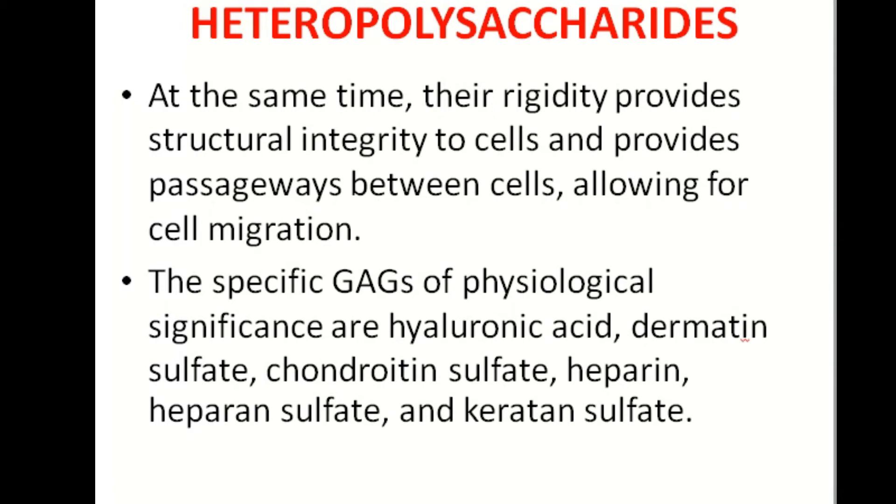Hyaluronic acid is one example, particularly found in joints. Heparin is another one of the most important glycosaminoglycans.